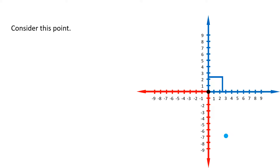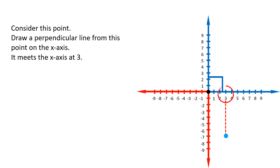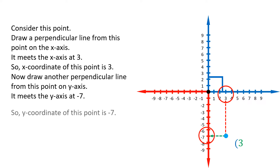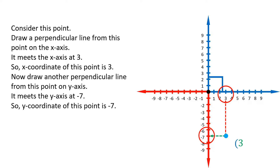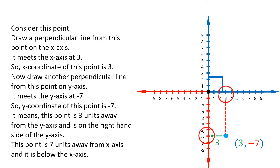Consider another point: draw a perpendicular to the x-axis — it meets at 3, so the x-coordinate is 3. Draw a perpendicular to the y-axis — it meets at negative 7, so the y-coordinate is negative 7. This means the point is 3 units to the right of the y-axis and 7 units below the x-axis.